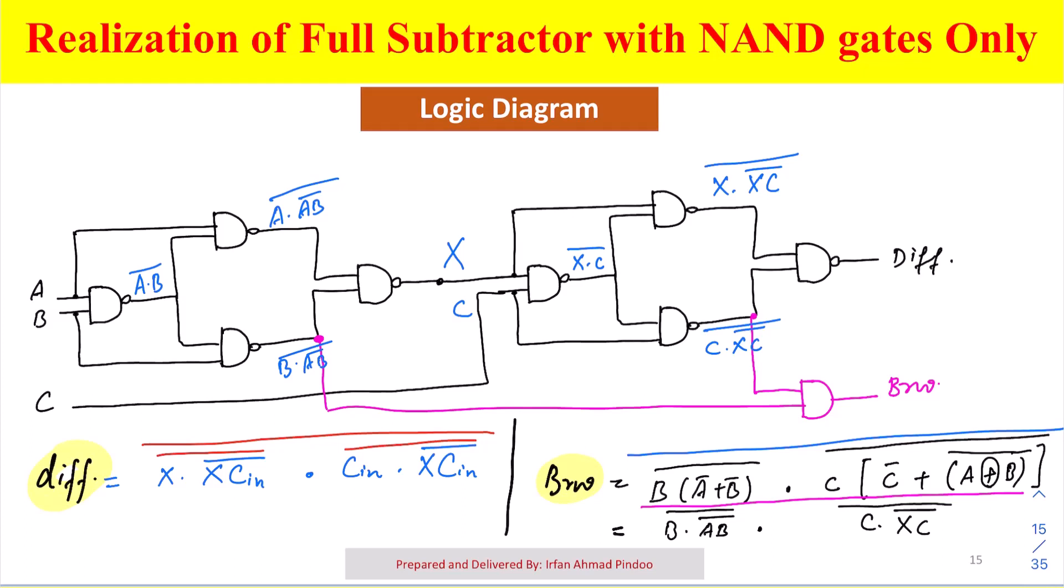Let us check first of all how difference is implemented, which is A XOR B XOR C. A XOR B is something we have referred as X ultimately, and we have done this in our previous video also regarding half subtractor. We implemented A XOR B using four NAND gates.